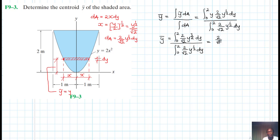This is just going to be equal to 2 over root of 2, y to the power 5 over 2 divided by 5 over 2, evaluating this from 0 to 2, then everything divided by 2 over root of 2, y to the power 3 over 2 divided by 3 over 2, evaluating this from 0 to 2.